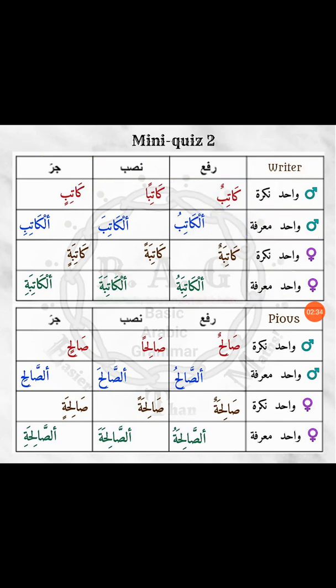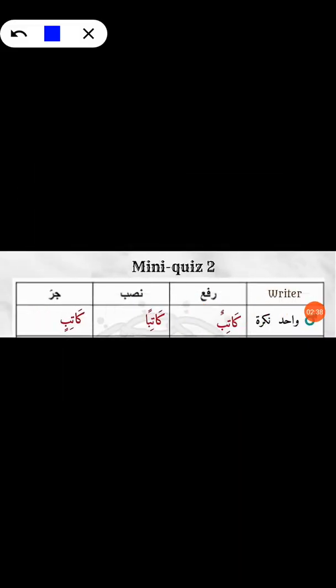So as you can see, we have the word kathibun, which means 'a writer.' It has tanwin and no al, and this is vahid — we haven't done plurals and singulars yet. This is masculine because none of the five reasons for an ism to be grammatically feminine apply here. So this is a grammatically masculine ism, and the tanwin tells us it is nakra and rafa because of the 'un' sound.